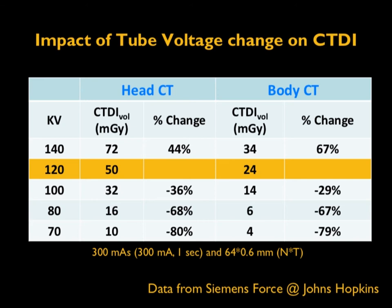If we go to a higher tube voltage from 120 to 140 kV, for a head phantom there is a 44% increase and for the body phantom about 67% increase. This tells us there is a paradigm shift now in CT protocol. Historically, all protocols were done at 120 kV. Now, with this paradigm shift, for pediatric patients and small adults, one can decrease the tube voltage and thereby gain the advantage of decreasing the radiation dose to the patient. That is one of the key optimization strategies employed for optimizing radiation dose in CT.